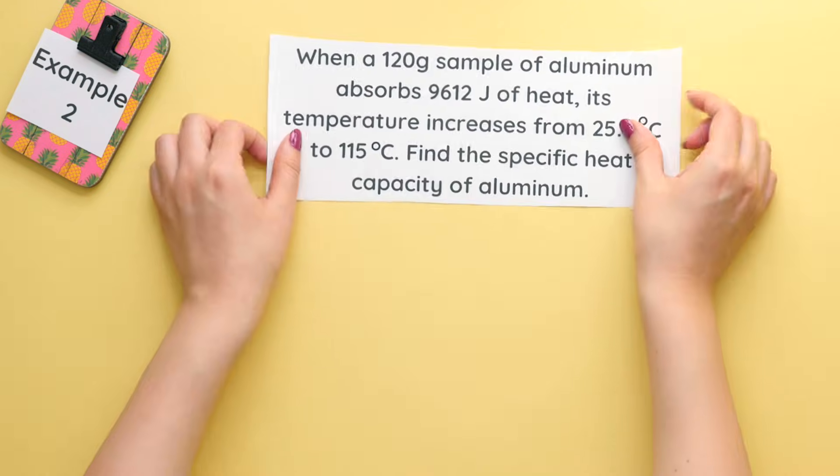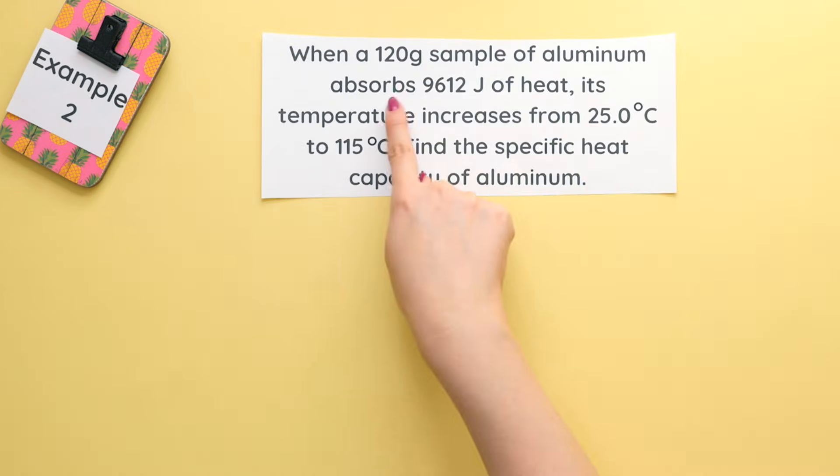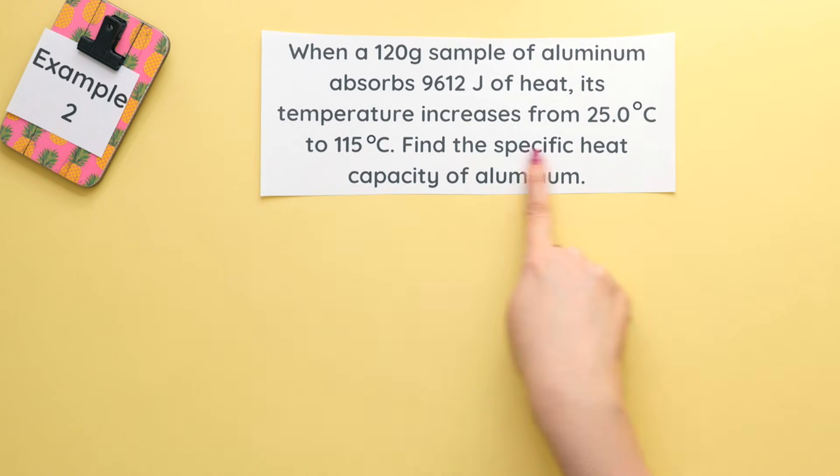Example 2: When a 120 gram sample of aluminum absorbs 9,612 joules of heat energy, its temperature increases from 25 degrees Celsius to 115 degrees Celsius. Find the specific heat capacity of aluminum.